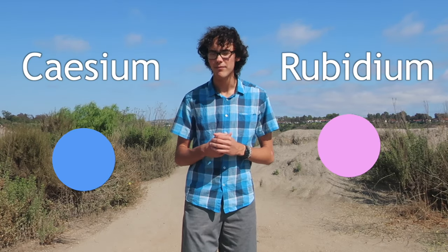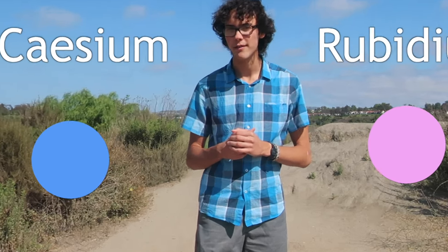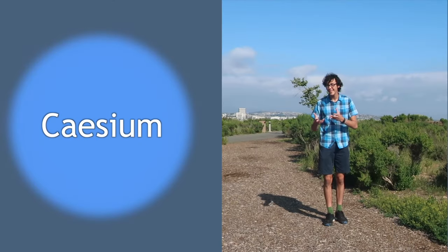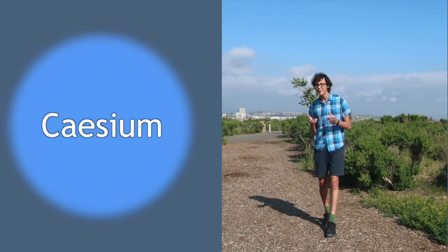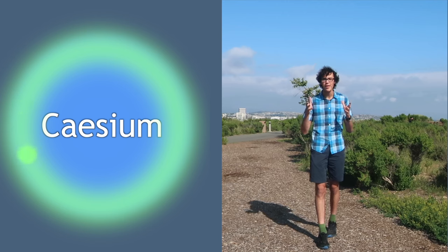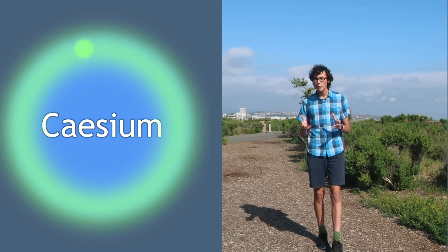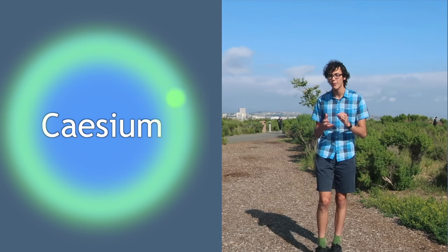The reason atomic clocks are called atomic is because they use individual atoms of cesium or rubidium to keep track of time. Let's look at one of those atoms. Both atoms of cesium and rubidium have one electron that hovers in the outer reaches of the atom. And that electron will absorb a very specific frequency of light.